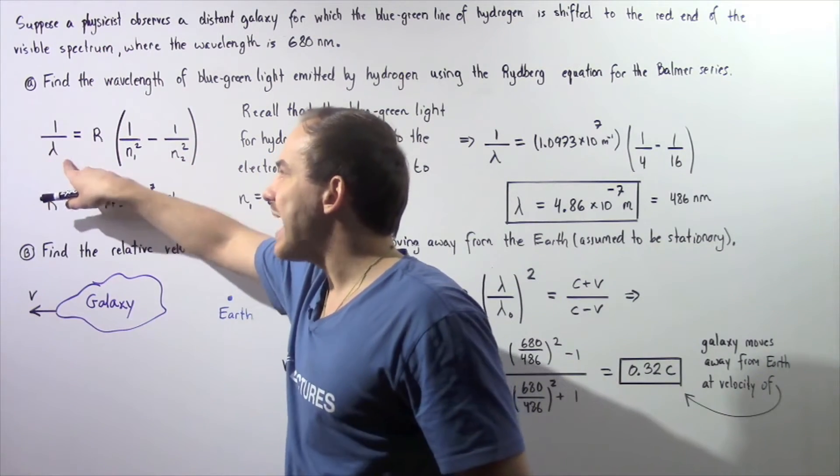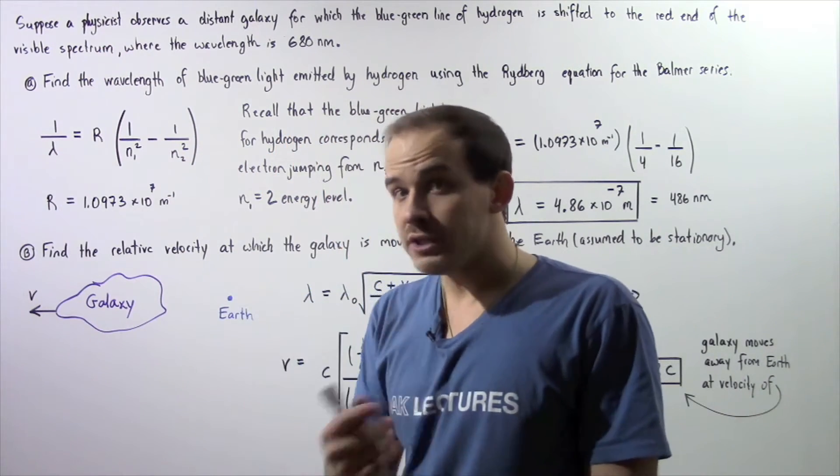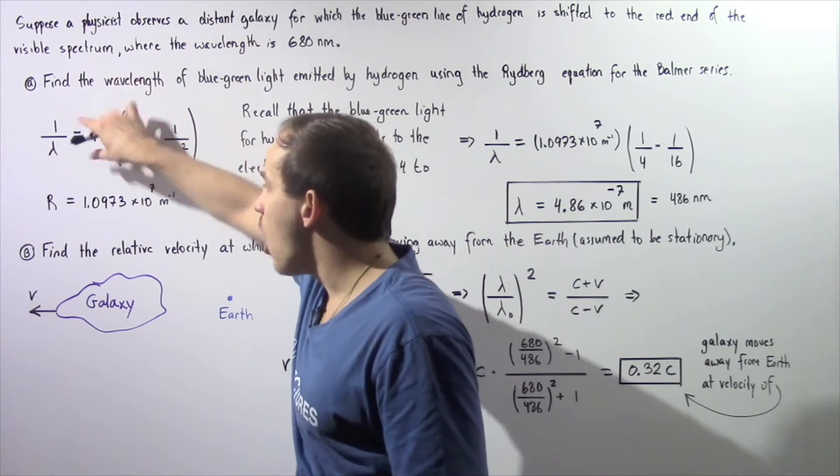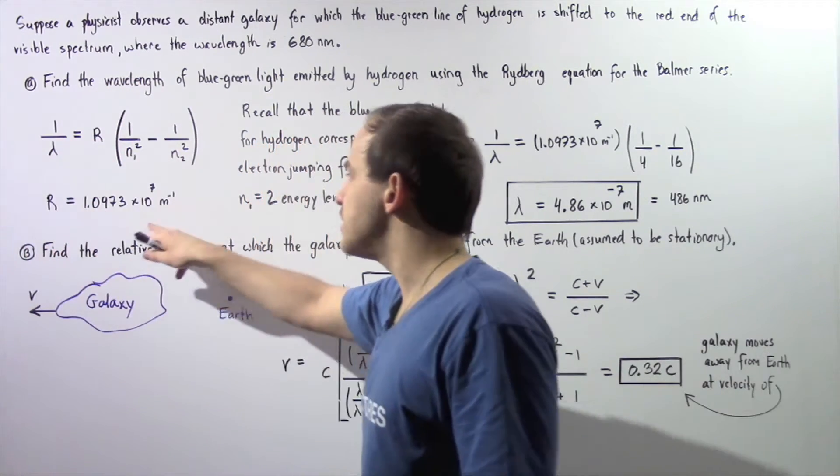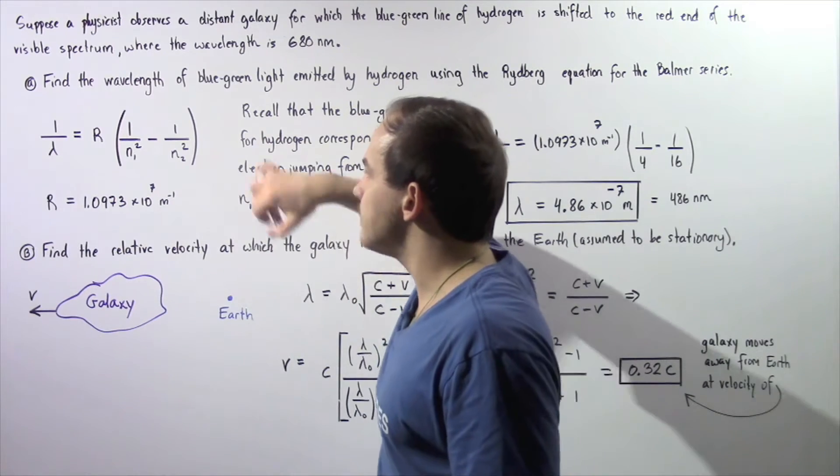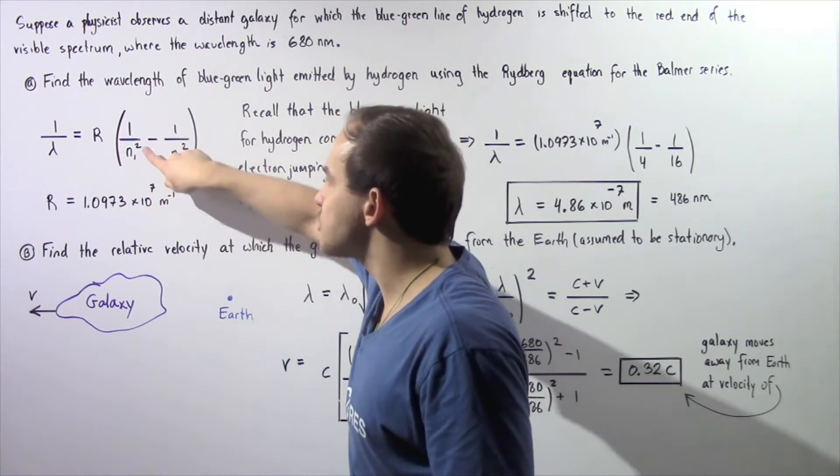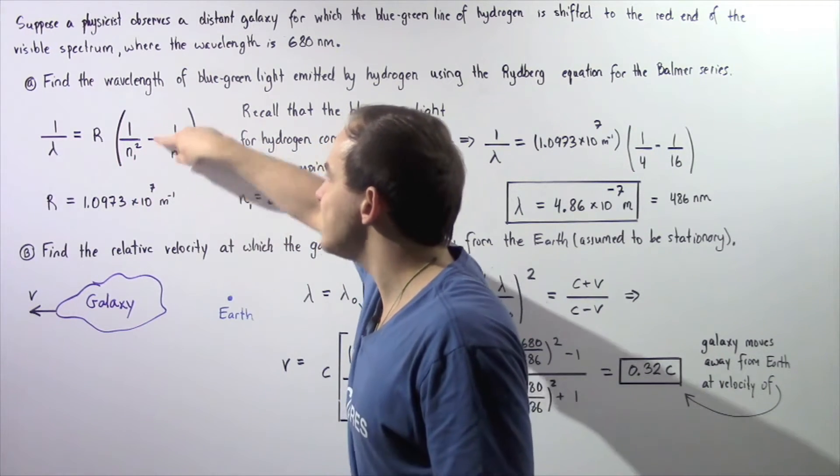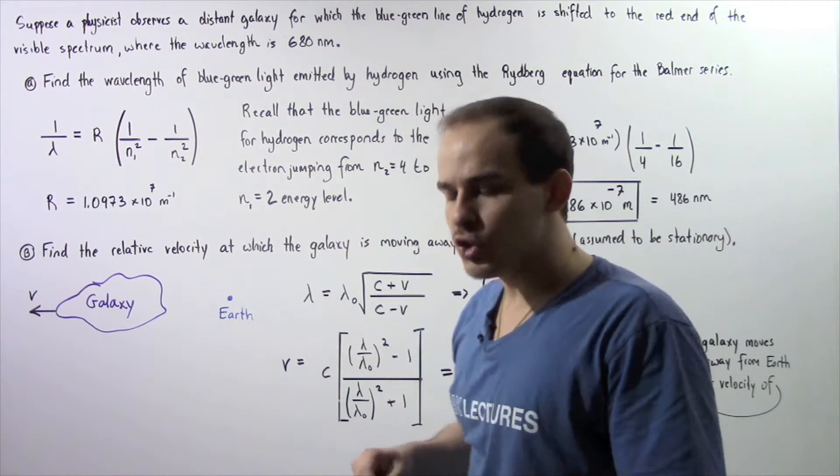1 divided by λ, the wavelength we're looking for, is equal to R, the Rydberg constant given by this value, multiplied by 1 divided by the square of N₁ minus 1 divided by the square of N₂.